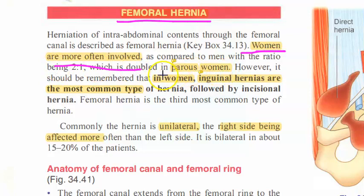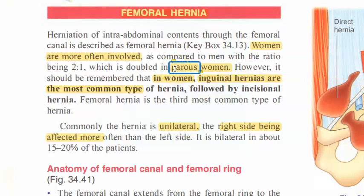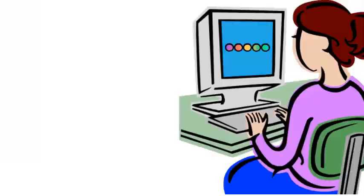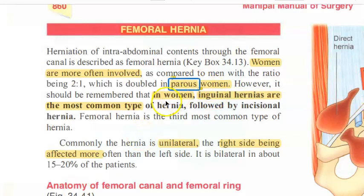Femoral hernias are more common in women, especially parous women — those who have given birth multiple times. This is because these women have a relaxin hormone effect, which contributes to the development of femoral hernia.